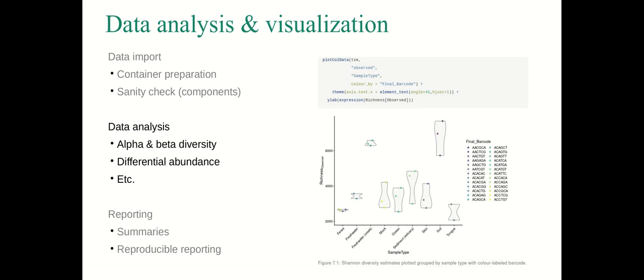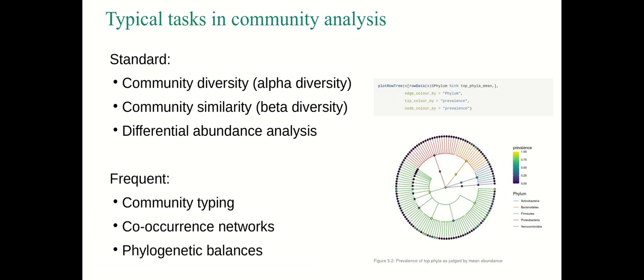Then follows the data analysis part. In the data analysis part of taxonomic community profiles, we typically analyze alpha and beta diversity meaning the species diversity and community composition. And we can also do differential abundance analysis comparing different conditions between each other. There are different methods but alpha diversity and beta diversity analysis and differential abundance analysis are very standard ways to look at microbiome data.